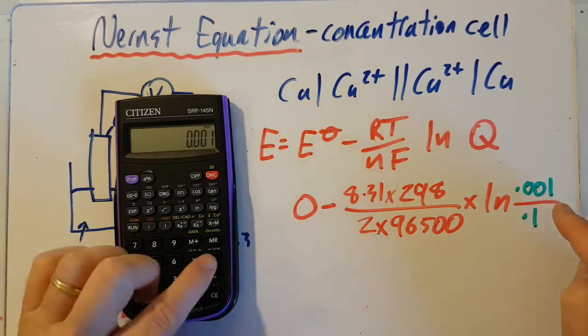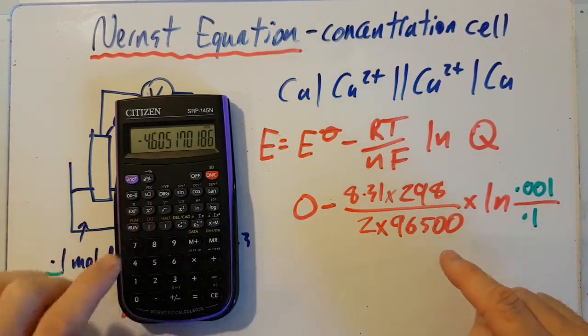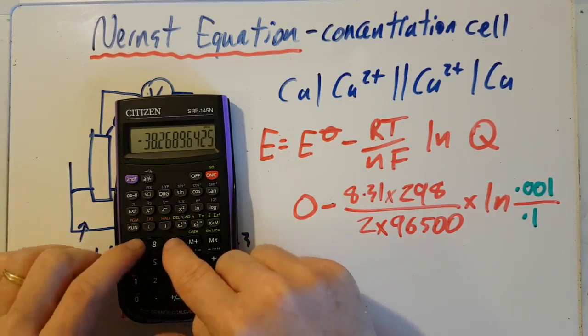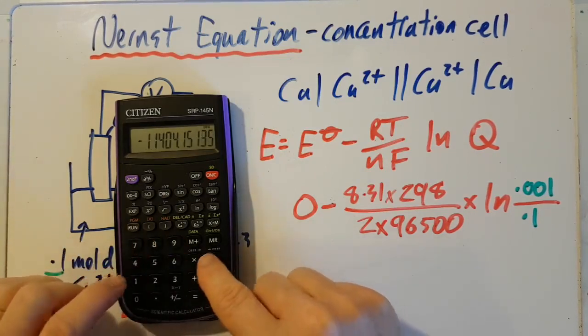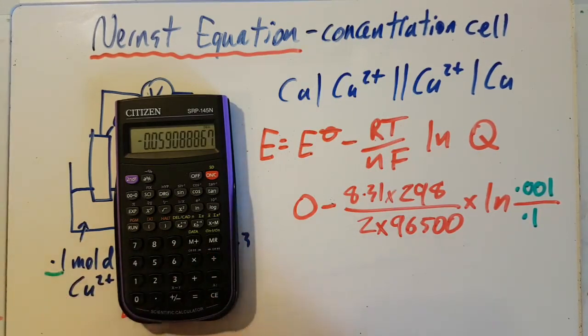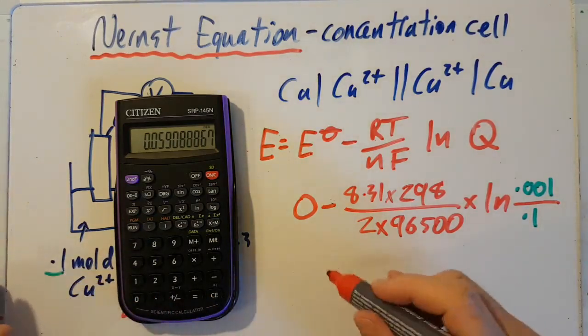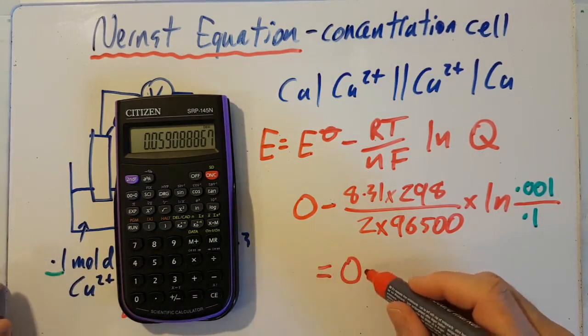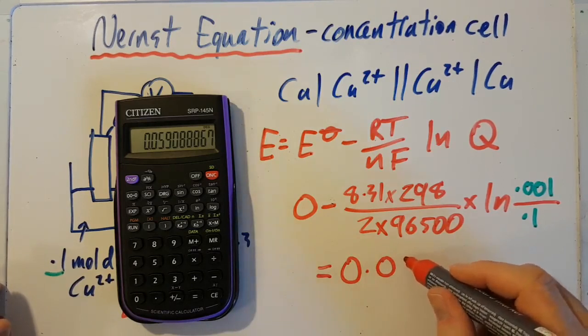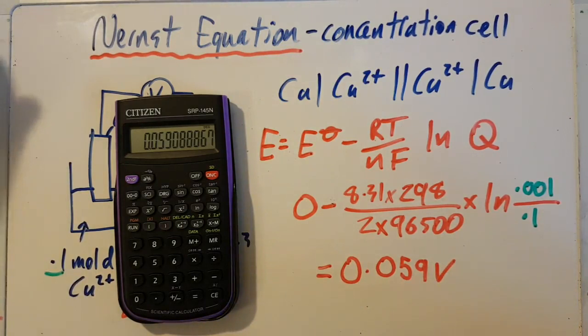So I've got 0.001 divided by 0.1 equals, take the ln, let's go along the top, times 8.31 times 298 divided by 2 divided by 9, 6, 5, 0, 0, wallop. Change the sign, and you have an impressive, ignoring sig fig rules, 0.059 volts. What are you going to do with that? Not much.